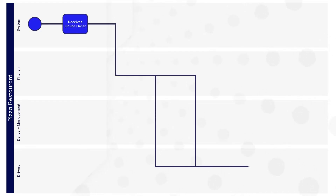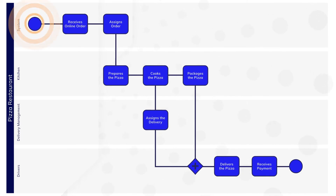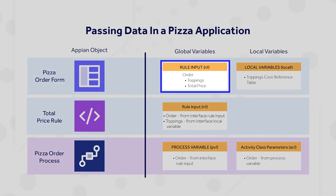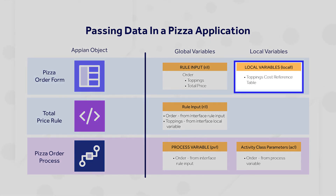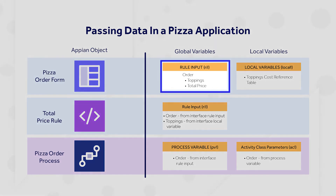As an example, imagine a process used to order a pizza. Let's think about the screen to select which toppings should go on the pizza. There's an interface used to select the toppings. Within that interface, there's a rule input to save the order information, including selected toppings and total price, so that it can be passed back to the process model. We can define a local variable within our interface to query our database for the reference table that contains toppings and their prices. A local variable works well here because we don't need to pass all of the toppings back to the process model. As the user is making selections, their selections are saved to our order rule input.